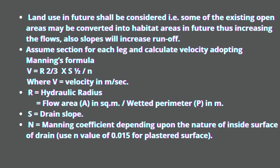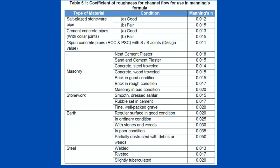You can use 0.015 as Manning's coefficient for plastered drains. Other surface values are given in Table 5.1 — the coefficient of roughness for channel flow for use in Manning's formula. For example, self-glazed stoneware pipes in good condition have N = 0.012, and fair condition N = 0.015. This table is also attached in the description.